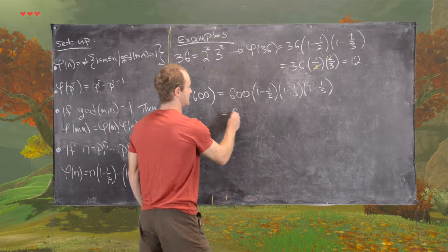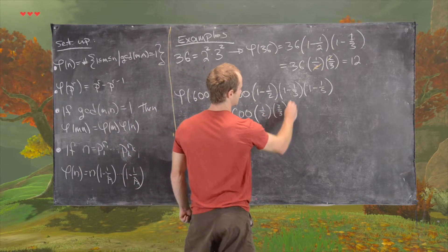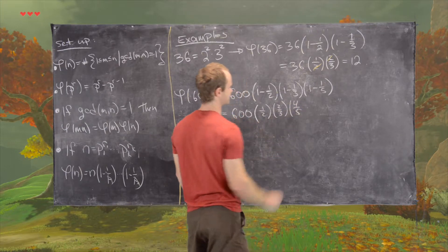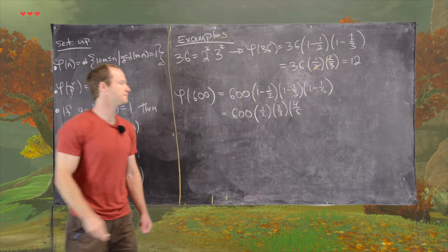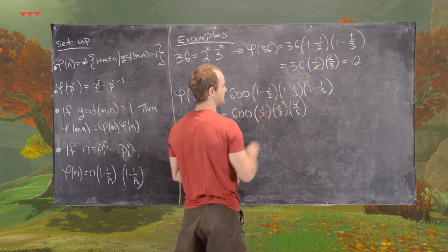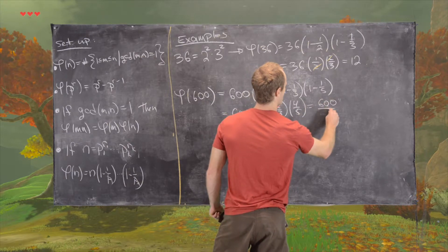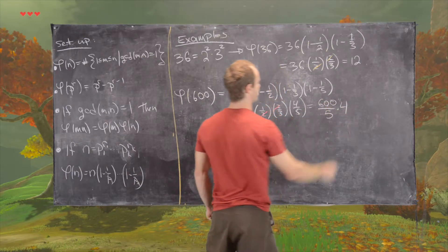So that will be 600 and then a half times 2 thirds times 4 fifths. So let's see what we can get from that.